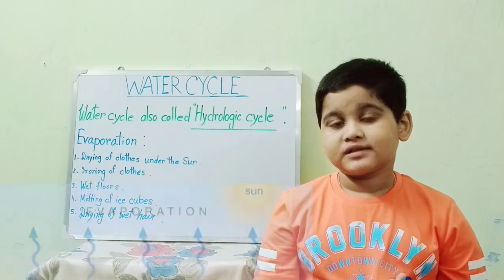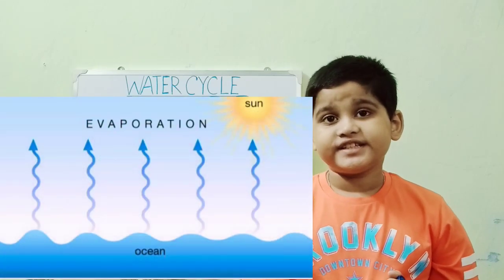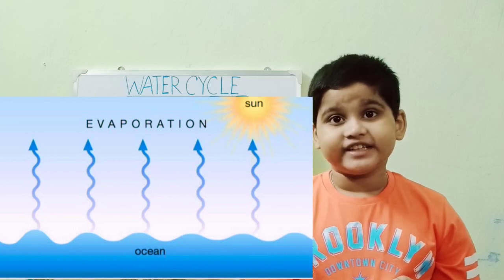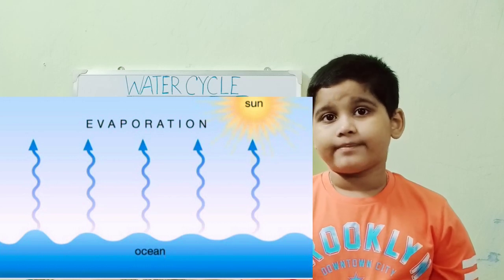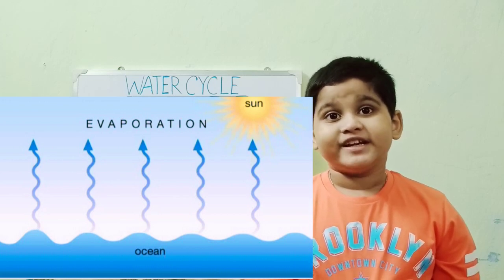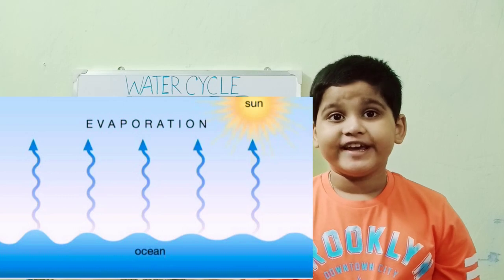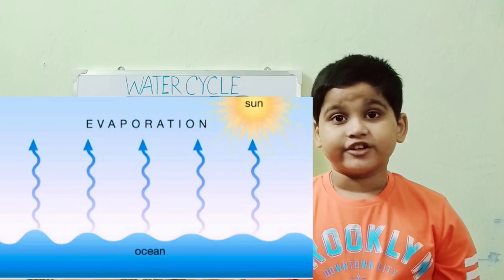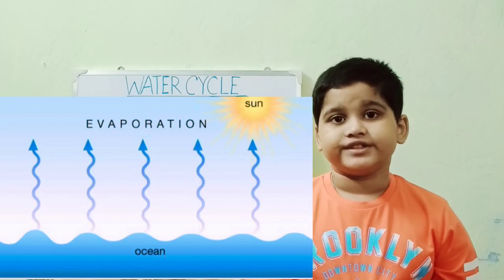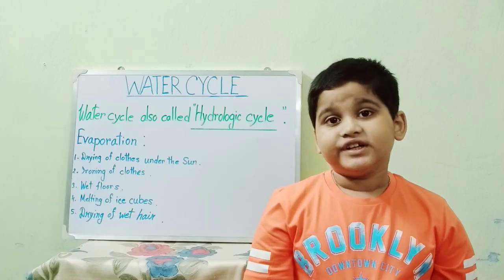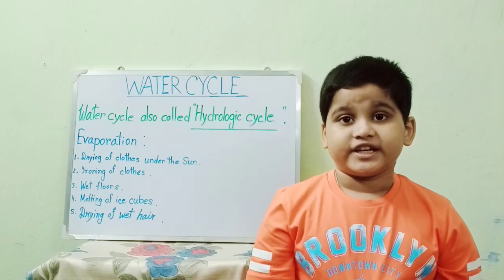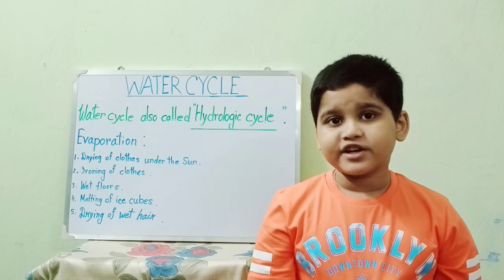Number 1: Evaporation. The sun heats up water in rivers and lakes and turns it into water vapour or steam. The water vapour or steam leaves the river, lake, or oceans and goes into the air. This is called evaporation. Water vapour rises up into the sky because gas is lighter than liquid.